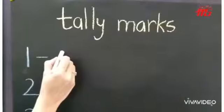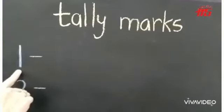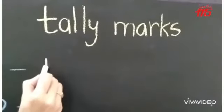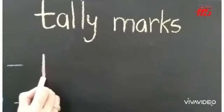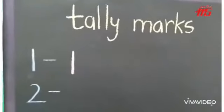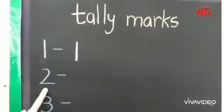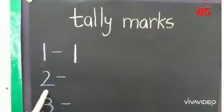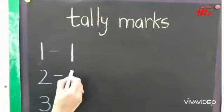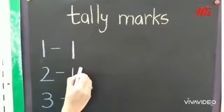Now, which number is this? One. So how many lines are we going to draw? One. Now which number is this? It's number 2. Now for number 2, how many lines are we going to draw? One. Two.